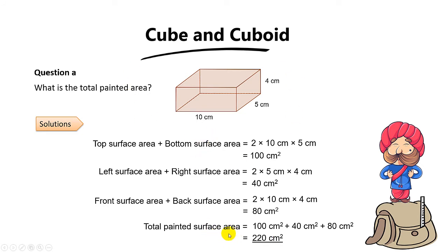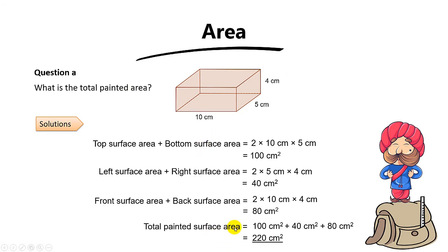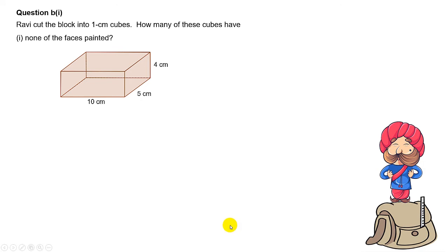This should be quite straightforward. Now for Part B, this is a tricky one. Ravi is now going to cut the block into 1cm cubes. For Part 1, we want to find how many of these cubes have none of the faces painted. Can you tell me which cubes will have none of the faces painted?